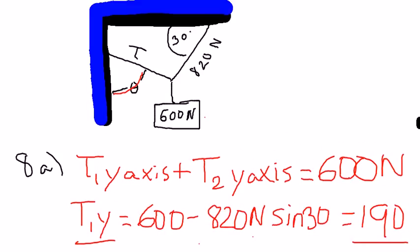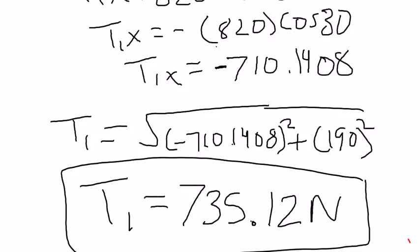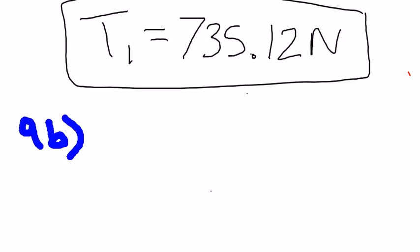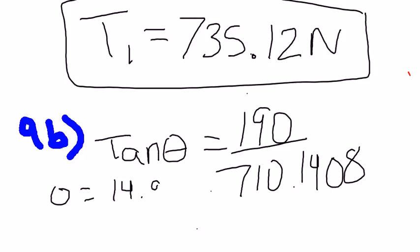To find that, you're going to use the tangent 190 over 710. Then you're going to use the inverse tan and you're going to get theta is going to be 14.978 degrees.